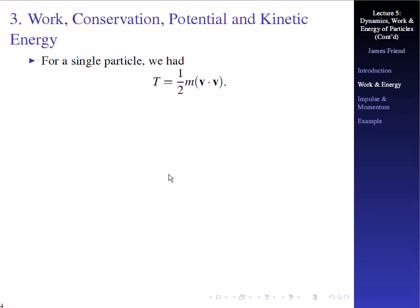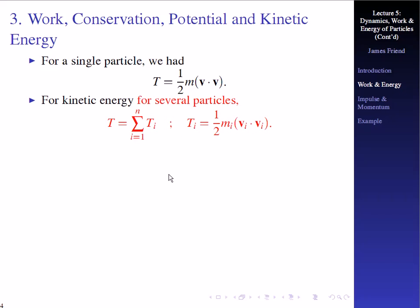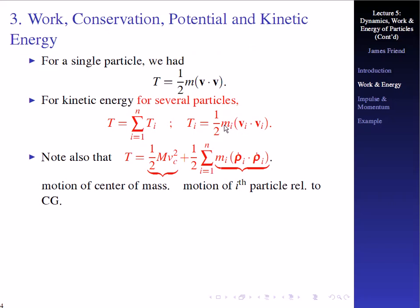For a single particle, the kinetic energy is equal to one-half M times V dot V. For several particles, we define the total kinetic energy as just the sum of the corresponding kinetic energies, since this is a scalar quantity after all. Each contribution is defined by the i-th mass and its velocity: M_i times V_i dot V_i, with the one-half factor. Another way to look at it is to split up the kinetic energy in terms of the motion of the center of mass, where M is the total mass and we have the velocity of the center of mass squared — V_C dot V_C — plus the sum of M_i times rho-dot_i dot rho-dot_i.